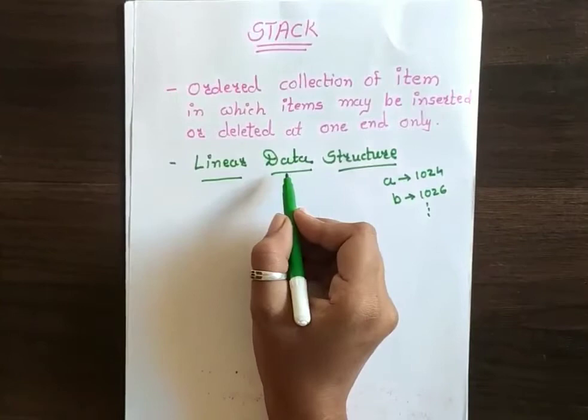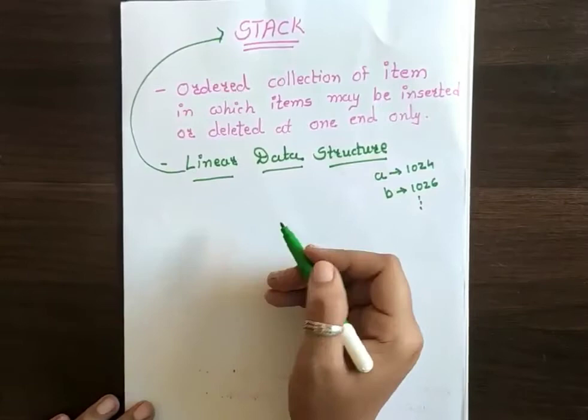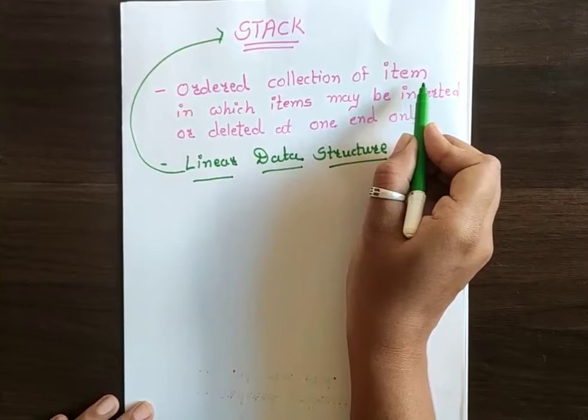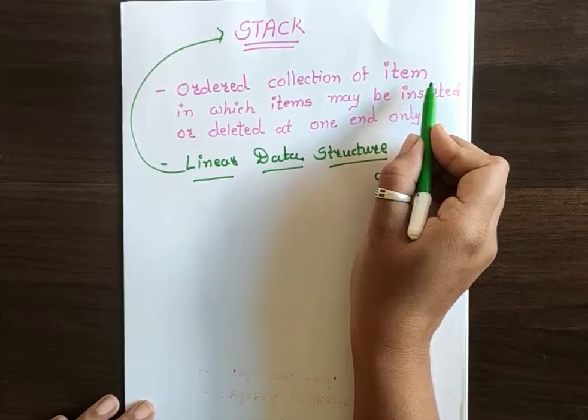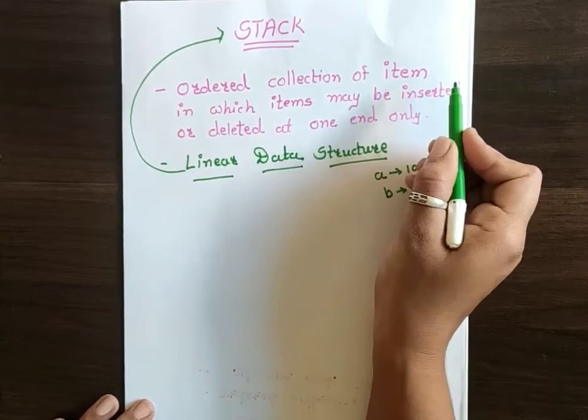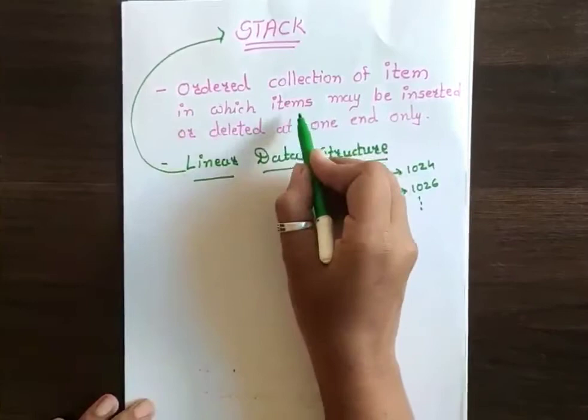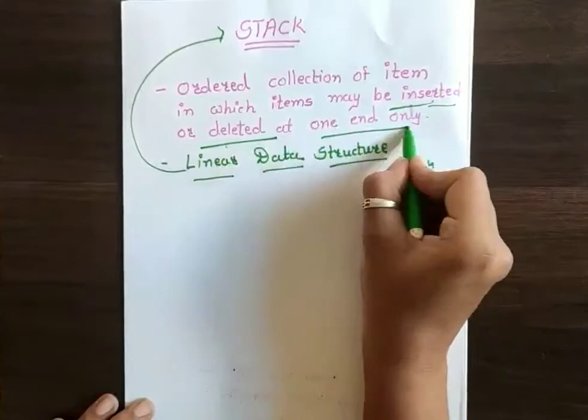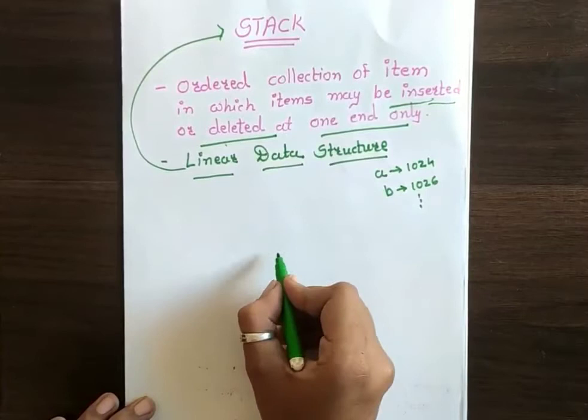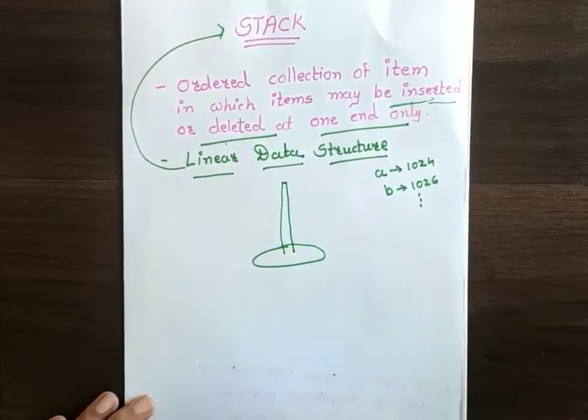Stack is a one kind of linear data structure that we are having, and it is an ordered collection of items. Ultimately, we use data structure to store the data where we can access the data efficiently and the insertion and deletion can take place very efficiently — that is the purpose of data structure. Stack is an ordered collection of items in which items may be inserted or deleted at one end only. We can take one example of a pile of CDs.